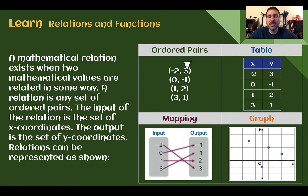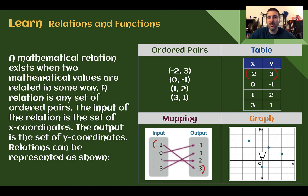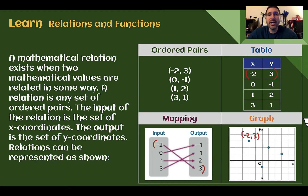All four representations show the same sets of coordinates. If we say these ordered pairs are our original coordinates — negative 2 and 3, X and Y — we can see that same thing written here, just split apart in X and Y. Down in our mapping, which has an arrow pointing from the input to the output, negative 2 points to 3. And on our graph, there is a coordinate at negative 2, 3. All four are just represented in different ways but give the same information.